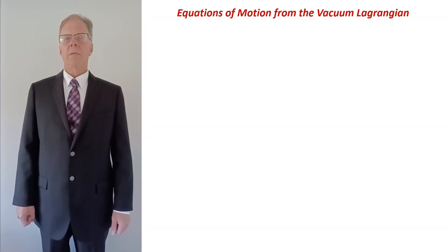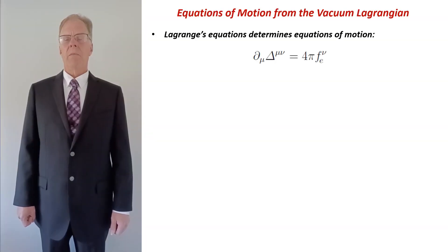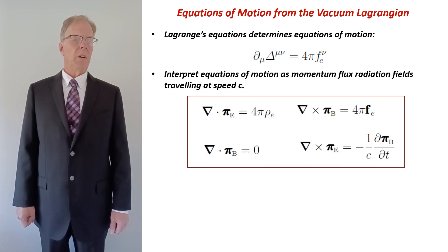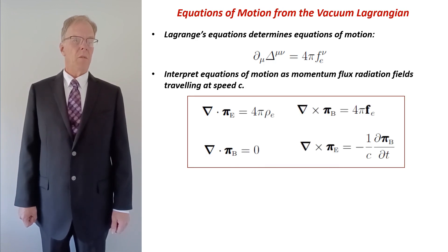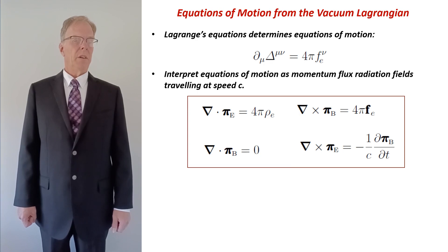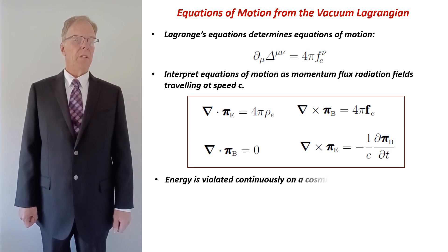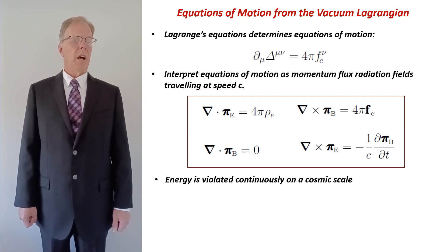Using the vacuum strain as our field quantity, we can apply Lagrange's equations in the usual way to determine equations of motion. This set of equations is still Maxwell's equations, except that in this new interpretation, the velocity fields are now momentum flux fields that are moving at the speed of light. The magnetic flux field still circles around the particle, but the electric flux radiates outward, representing a violation of conservation of energy on a cosmic scale.